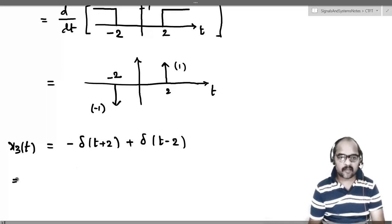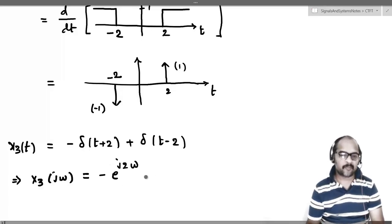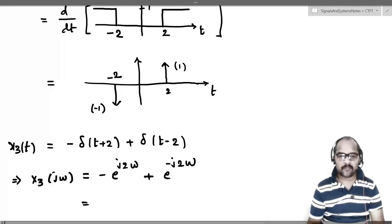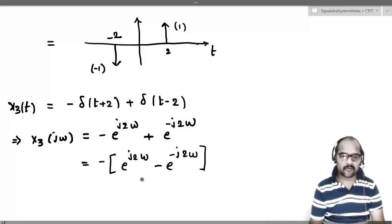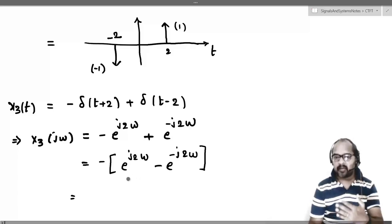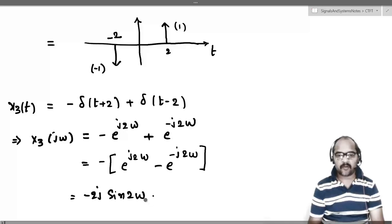So x3(t) = -δ(t+2) + δ(t-2). The corresponding Fourier transform X3(jω) = -e^(+j2ω) + e^(-j2ω). Taking out the minus sign, this equals -(e^(j2ω) - e^(-j2ω)) = -2j sin(2ω). That is the Fourier transform of x3(t).